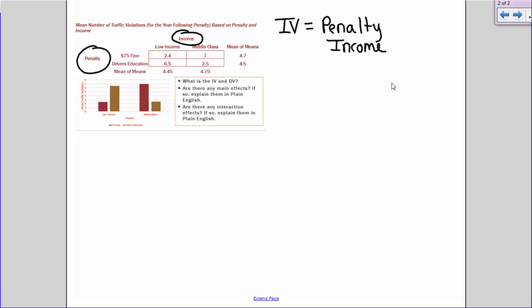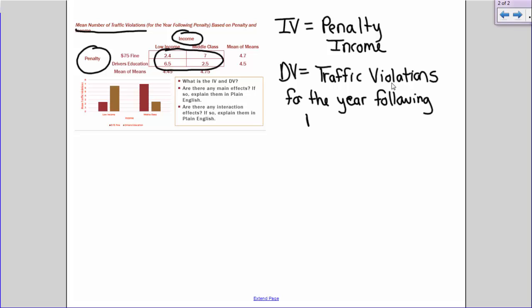Income is really like a pseudo-independent variable because you're not manipulating it, you're just basing it on what their income is. Just like in the previous example, the type of pain is a pseudo-independent variable because you can't manipulate the type of pain they're experiencing. Well, maybe you could, but that wouldn't be very ethical. Here we go. Dependent variable, what do these scores represent? They represent the mean number of traffic violations. So our dependent variable is traffic violations. If we want to be specific, we could say traffic violations for the year following the penalty.